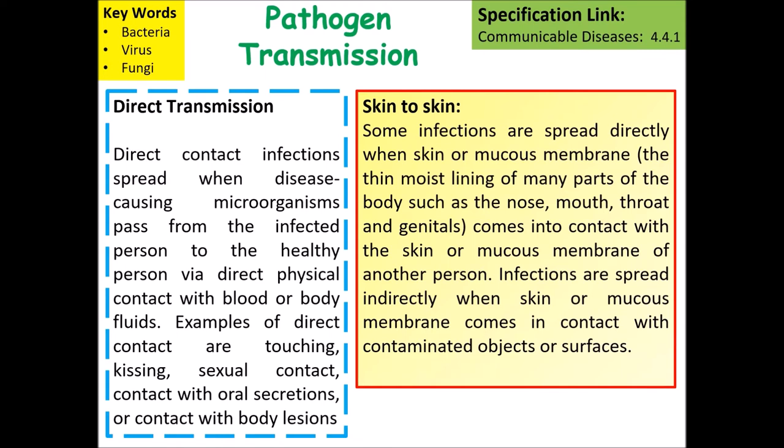Skin-to-skin contact: some infections spread directly when skin or mucous membranes — the thin moist layers found in areas such as the nose, mouth, throat or genitals — come into contact with the skin or mucous membrane of another person.